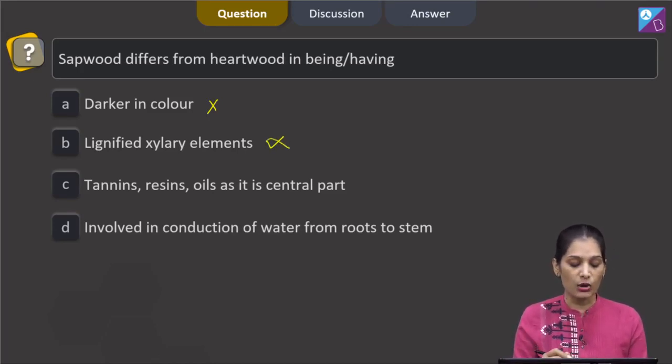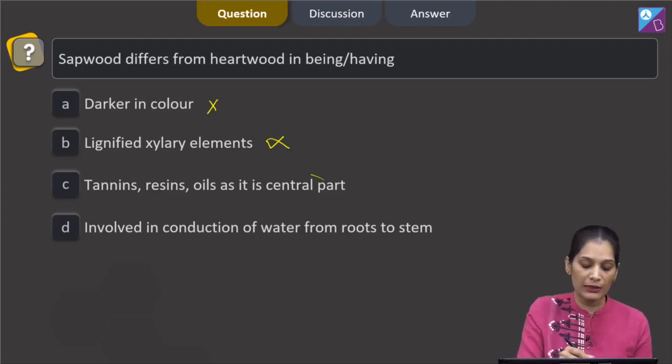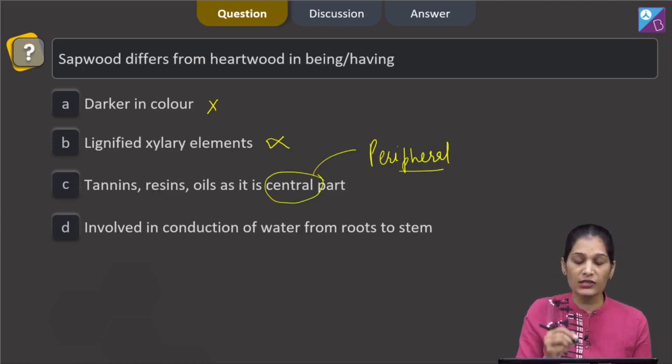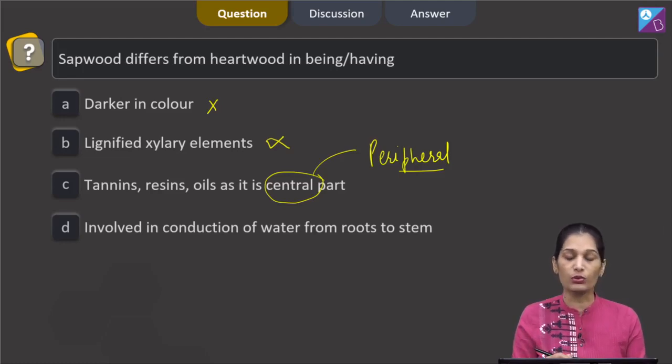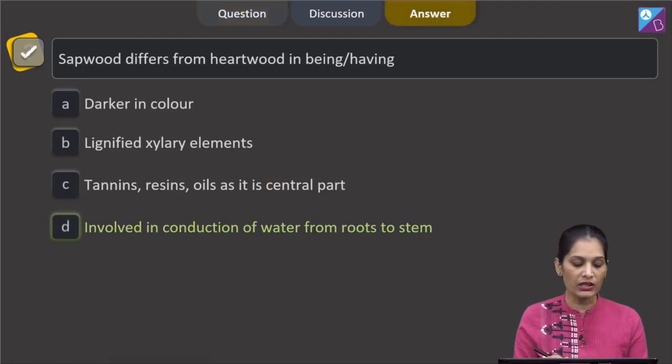C, tannins, resins, oils as it is central part. No, the sapwood is not the central part, it is the peripheral part. The central part is the heartwood which does not conduct water and minerals. Now D, it is involved in conduction of water from roots to stem. Yes, this is the function of the sapwood. It is the peripheral part and it conducts water and minerals from root to the stem. So, the correct option for the given question is option D which says involved in conduction of water from roots to stem. Let's pick up the next question.